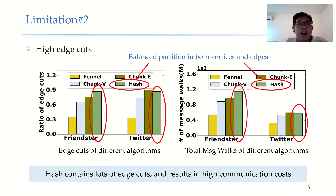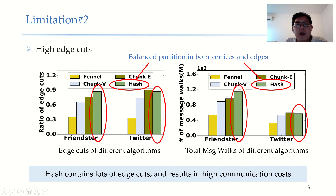The second limitation is high edge cuts. We mainly focus on the Hash algorithm, as it can achieve a balanced partition in both vertices and edges. The left figure shows the ratio of edge cuts of different partition algorithms when partitioning into eight subgraphs. Hash always contains the highest ratio of edge cuts, and as a result, the right figure shows that Hash also contains the highest number of message walks, meaning Hash needs more time for communication.